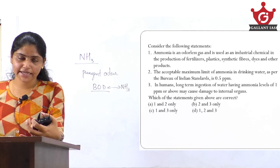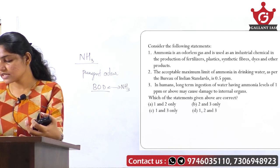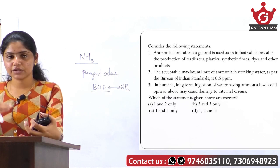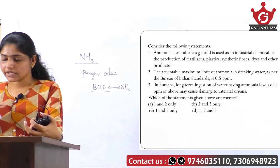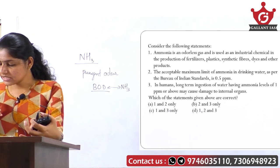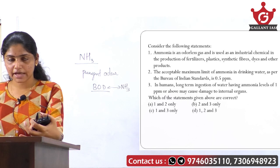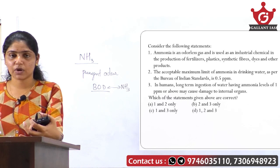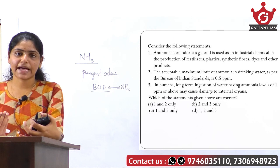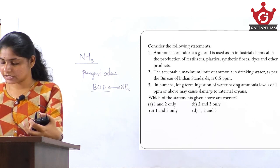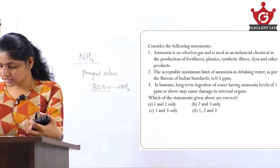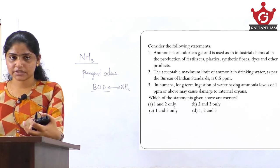So the answer here is option B — statements 2 and 3 only. Even without initially knowing statements 2 and 3, you've now confirmed they are right: the acceptable maximum limit of ammonia in drinking water as per BIS is 0.5 ppm, and long-term ingestion of water with ammonia levels greater than 1 ppm causes severe damage to internal organs.